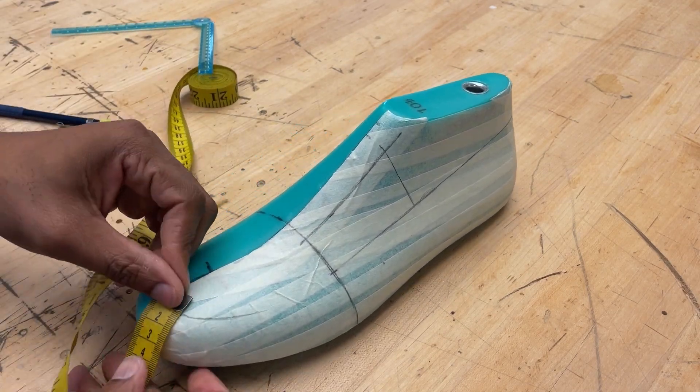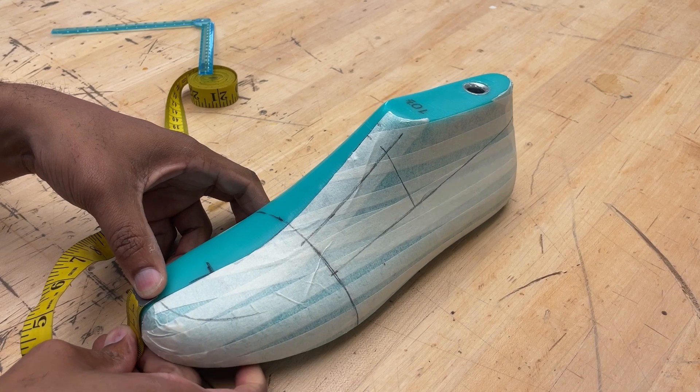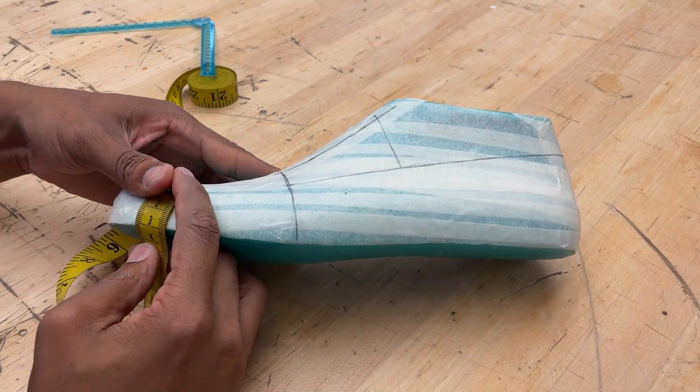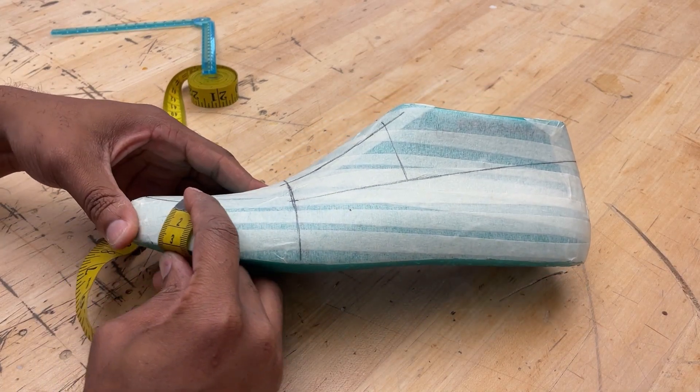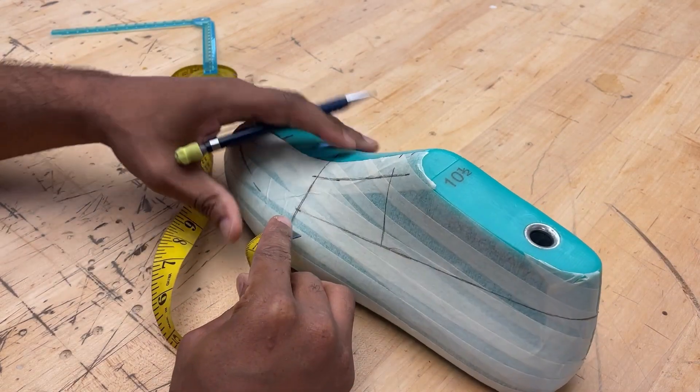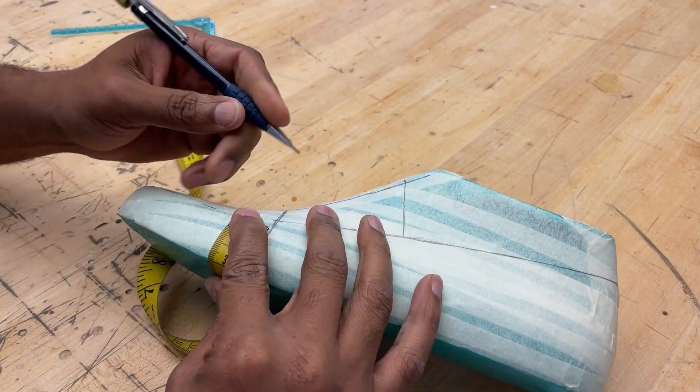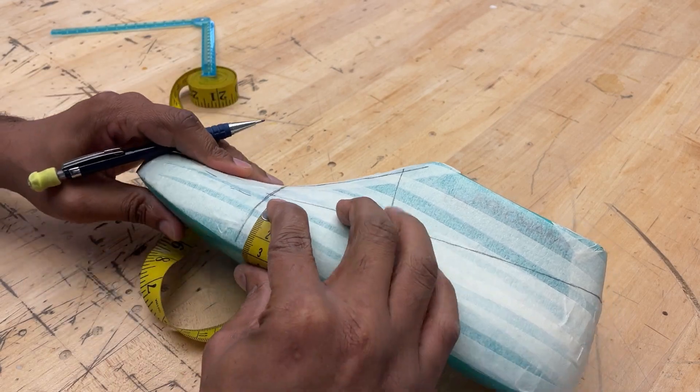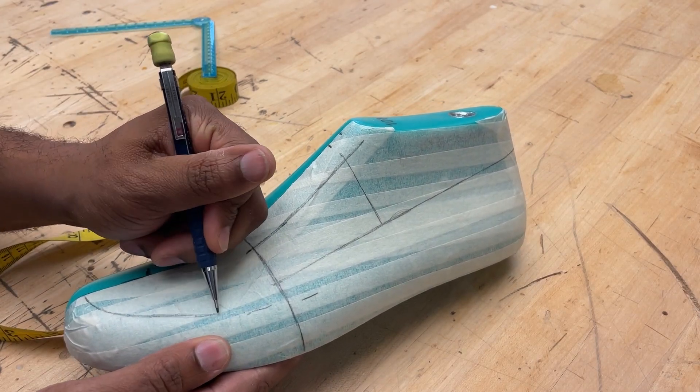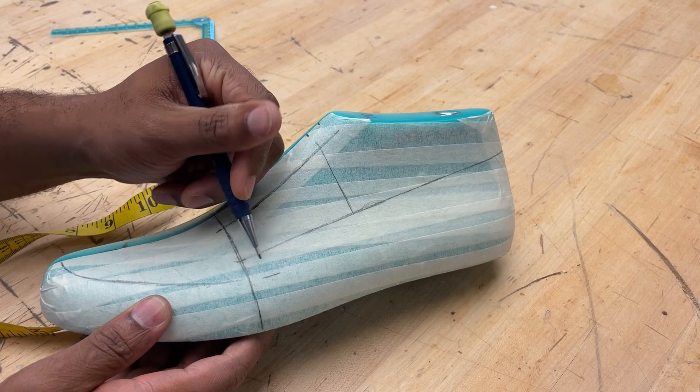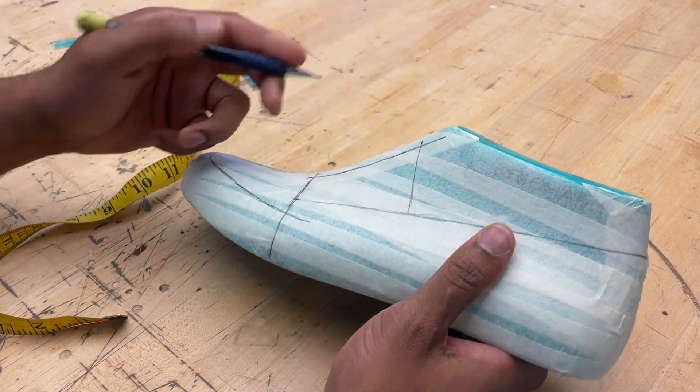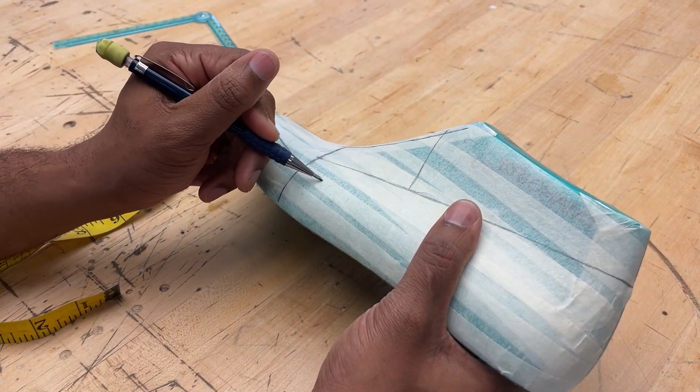Now I've moved on to the mud guard. This shoe will have a mud guard. I'm measuring, I believe it was three centimeters from the feather edge up. I'm going to use that as my measurement for my mud guard. You'll see me extend that line just beyond the ball of the foot, because at the end of the day, that's what you want your mud guard to protect. You're protecting your toes around to the ball of your foot because that's the area that is most likely going to encounter any abrasion or stubbing your toe, whatever the case may be.